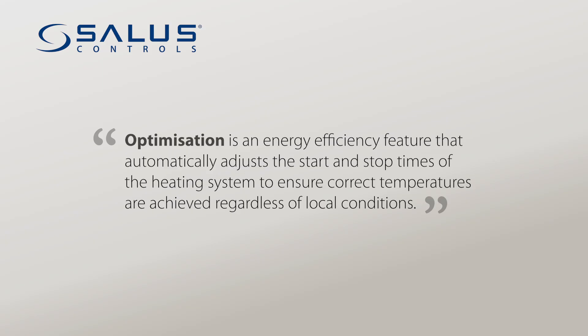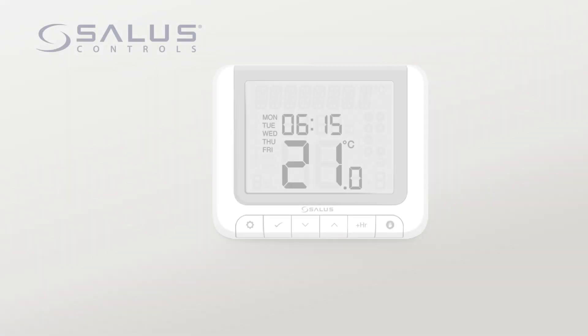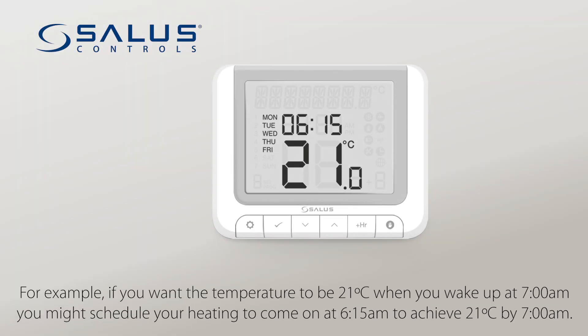Optimization is an energy efficiency feature that automatically adjusts the start and stop times of the heating system to ensure correct temperatures are achieved regardless of local conditions. For example, if you want the temperature to be 21 degrees Celsius when you wake up at 7 a.m., you might schedule your heating to come on at 6:15 a.m. to achieve 21 degrees Celsius by 7 a.m.